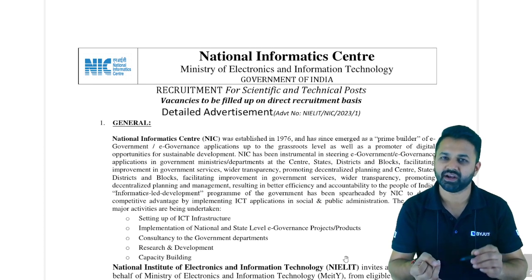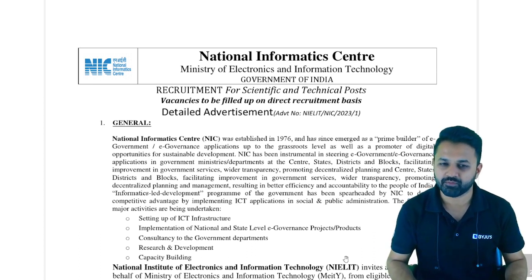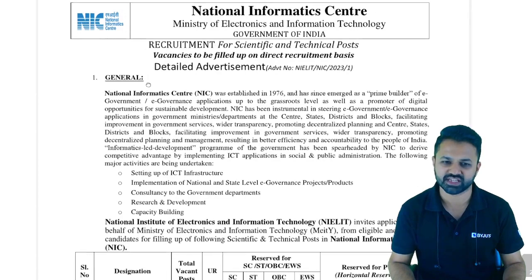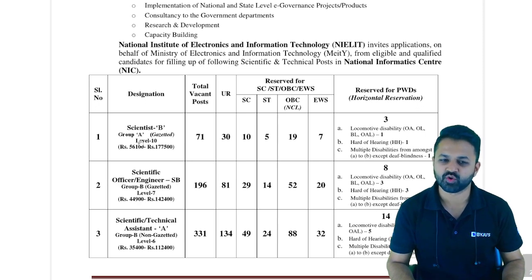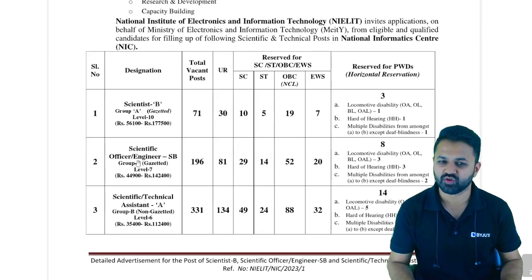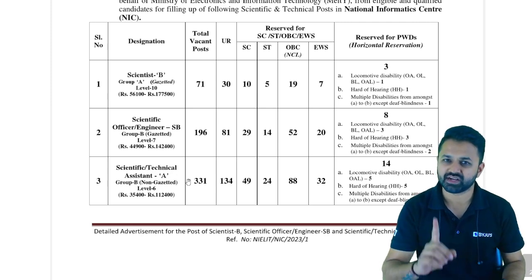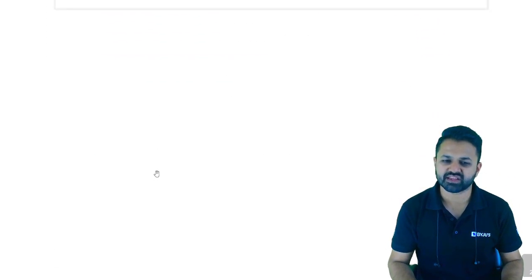What is the requirement, the selection procedure, how many seats are there, what is the age limit, and what is the date for filling the online form? This post is only for electronics and computer science students. If you are from another branch, this video is not for you. There are three different posts: Scientist B (Group A) with 71 posts, Scientific Officer/Engineer with 196 posts overall, and Scientific Technical Assistant with 331 posts.